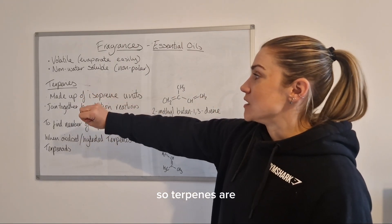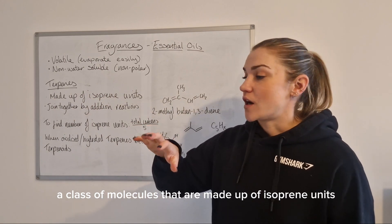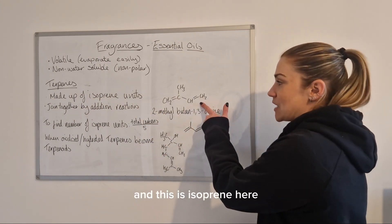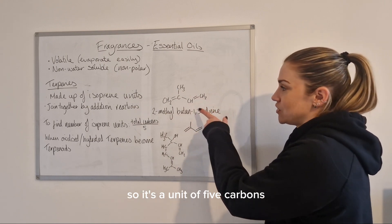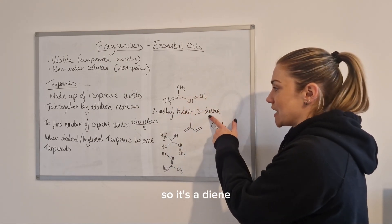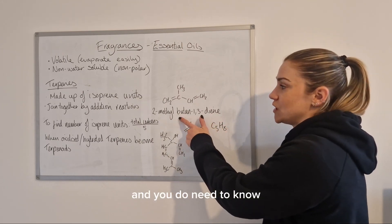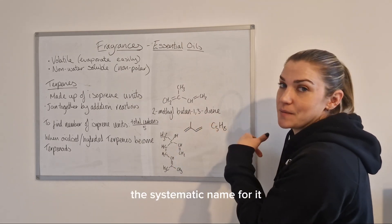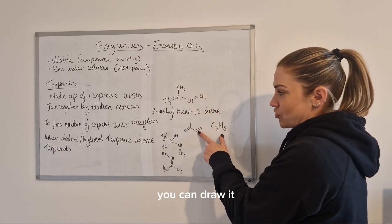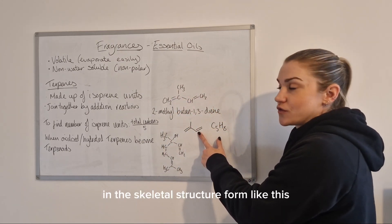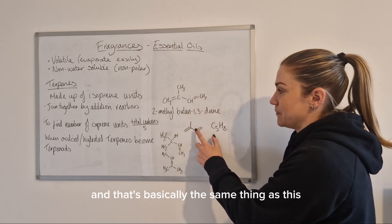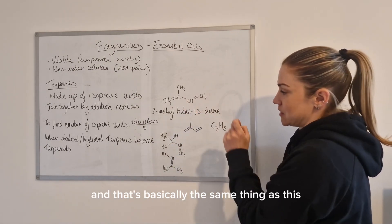Terpenes are a class of molecules made up of isoprene units. Isoprene is a unit of five carbons with two double bonds, so it's a diene. You need to know its systematic name and be able to draw it. You can draw it in skeletal structure form, which is a bit more straightforward to learn.